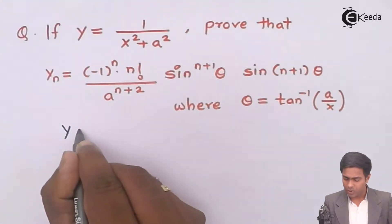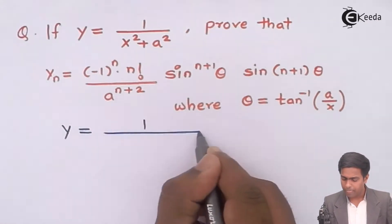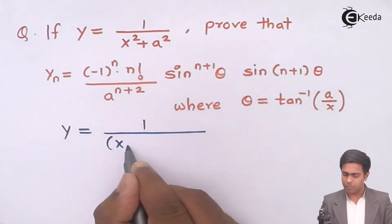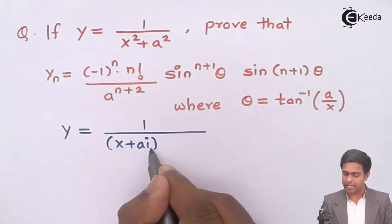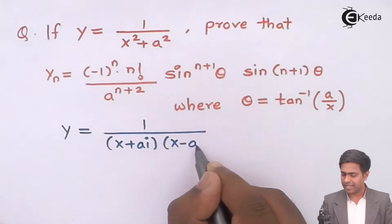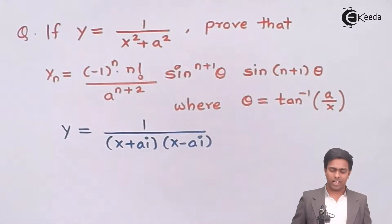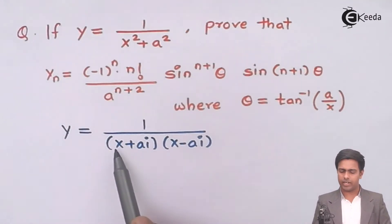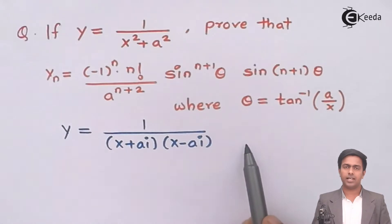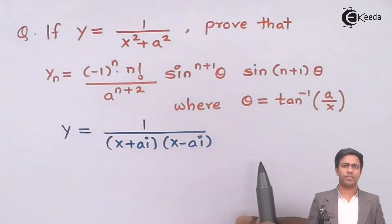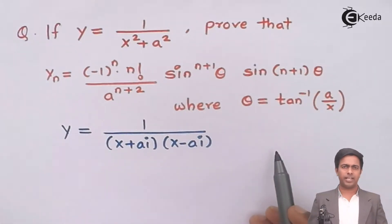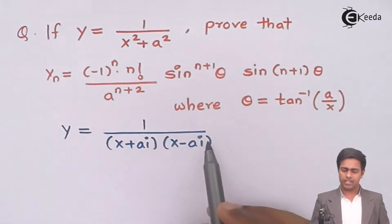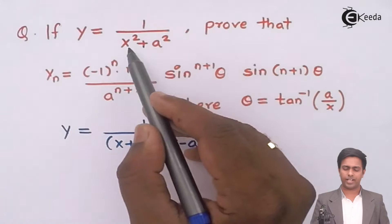Here I will say y equal to 1 upon — now this x square plus a square I will rewrite as (x plus ai) in the first bracket and (x minus ai) in the second bracket. If you apply the formula of a square minus b square then you get x square minus a square i square. Now i square is minus 1, and that is where you get plus a square. So this is the factored form of 1 upon x square plus a square.